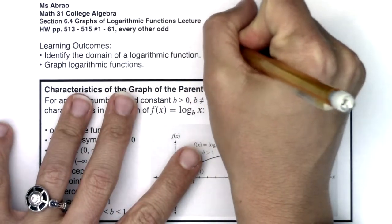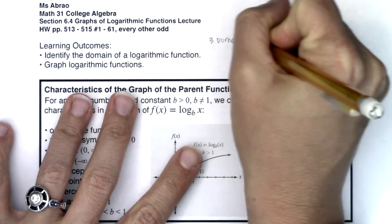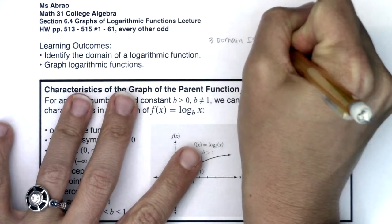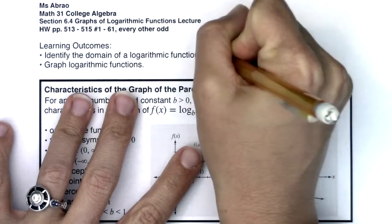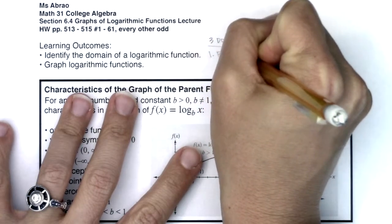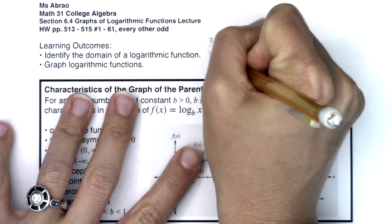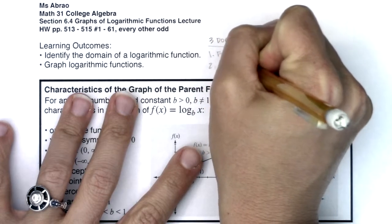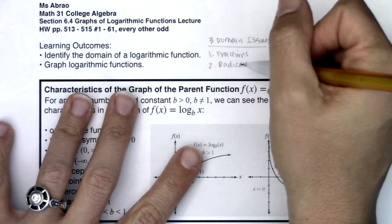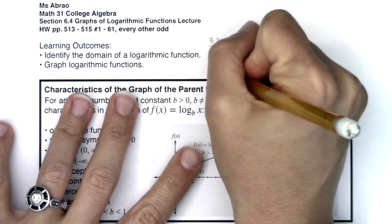Just to remind you, all semester we've been talking about our three domain issues. The first one we ran into was fractions, where the denominator was zero. We had radicals, where you had a radical with an even index and a negative radicand — that was a problem.